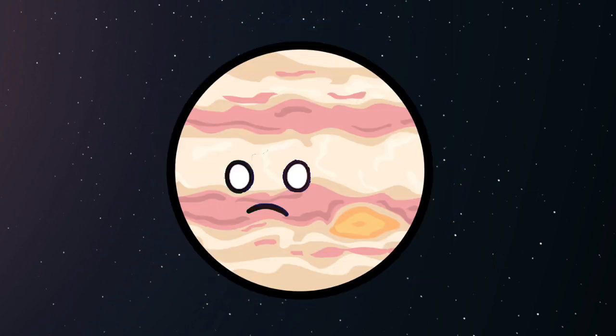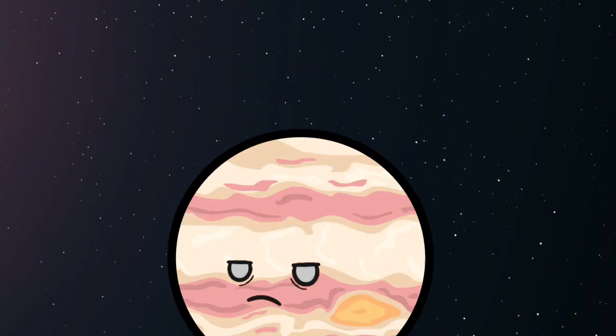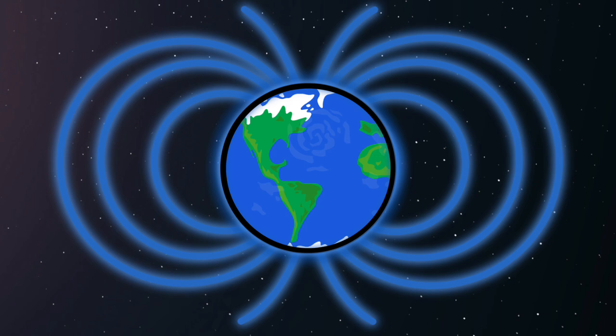Jupiter? I got this. A magnetic field is basically like a type of shield around the Earth that protects us from the solar flares.